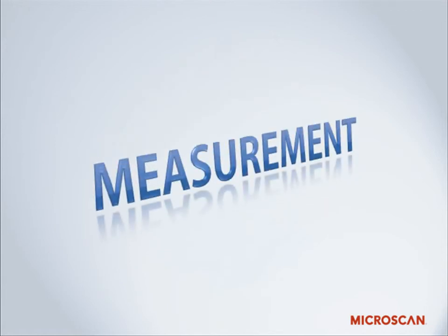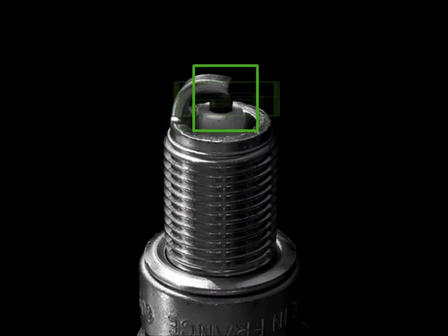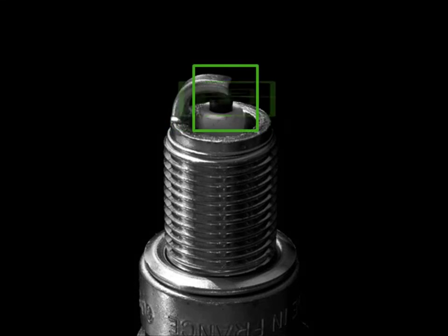Since its start, machine vision has been widely used for measurement — the automated measurement by a machine that can then be checked to a specified tolerance. For example, something we've been doing for years with machine vision is measuring the gap in spark plugs. This gap needs to be a certain width, or the car won't run as well, making it an extremely critical spec. We can use a camera to measure the spark plug gap by machine, eliminating the need for a person to measure and adjust the gap manually, automating the process more quickly and accurately.